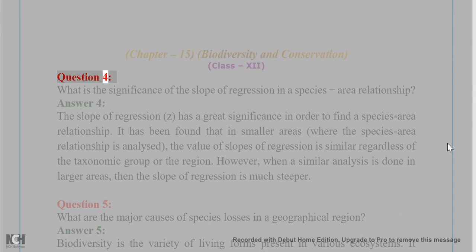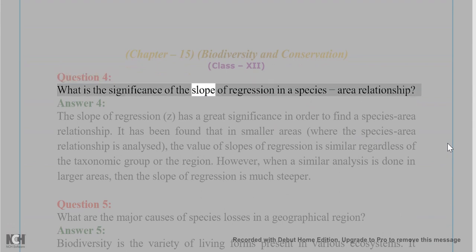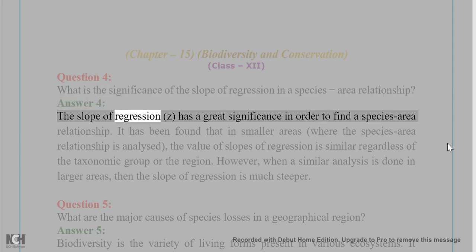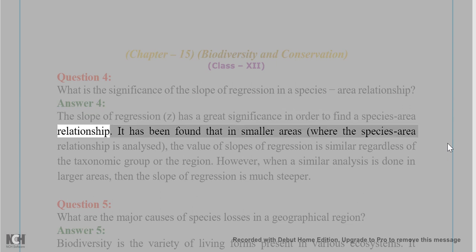Question 4: What is the significance of the slope of regression in a species-area relationship? Answer 4: The slope of regression, Z, has great significance in order to find a species-area relationship.